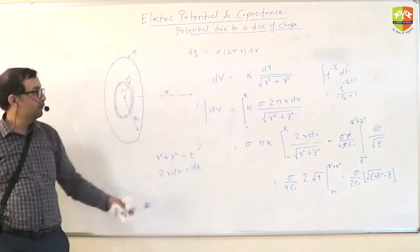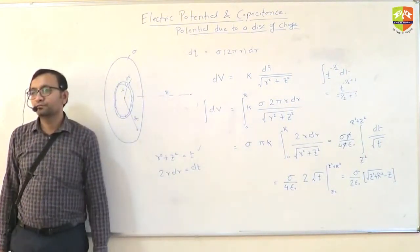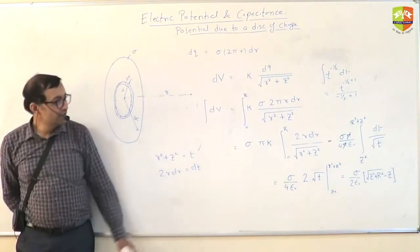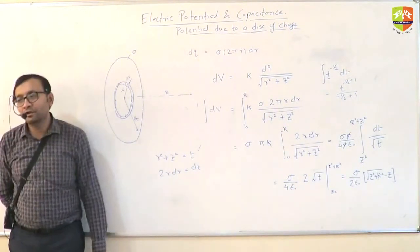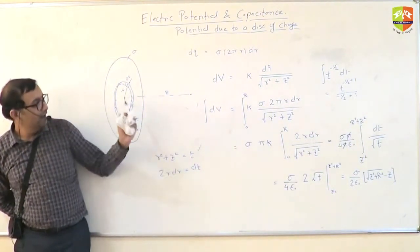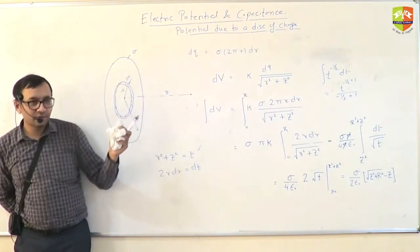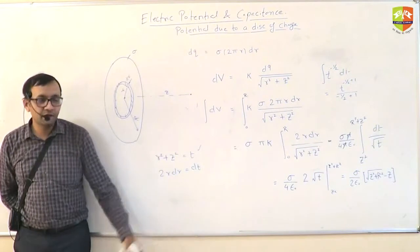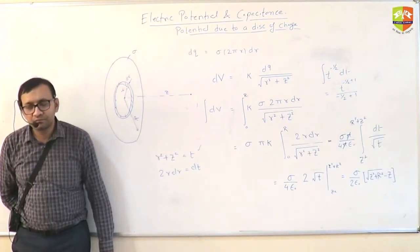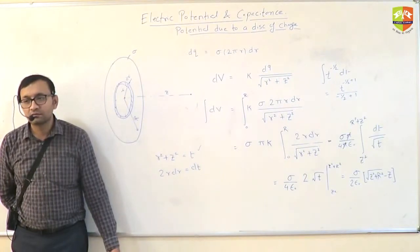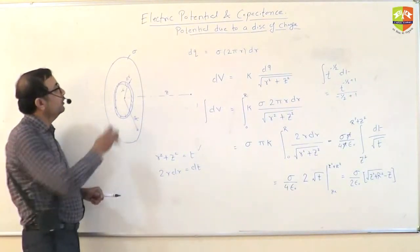So, at the center will be when z equal to 0. This formula is required because in your CT also, in CT, JEE, mains and everywhere, you know, at least up to this, they expect you to know. That is why I want to put the potential.